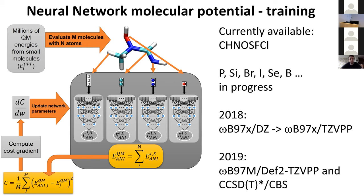Currently we cover seven elements — mostly biogenic elements or drug-like chemical space — to give you energy, forces, and Hessians. We're working to extend it to phosphorus, selenium, bromine, and more halogens. We use the ωB97X functional from Martin Head-Gordon — a range-separated hybrid functional. We started with a double-zeta basis set, upgraded to triple-zeta, and we're currently switching to a more modern functional, which is arguably the best functional we have today. We also have some training on coupled cluster data.